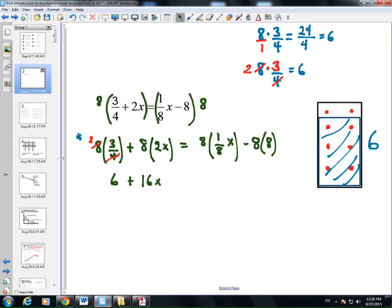Back to the problem. 3/4 of 8 is 6. 8 times 2x is 16x. 1/8 of 8. If you had 8 dollars, and you took an eighth of it, that's 1 dollar. And, 8 times 8 is 64.